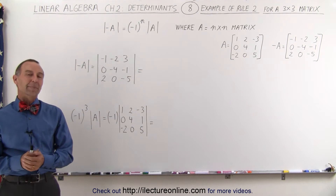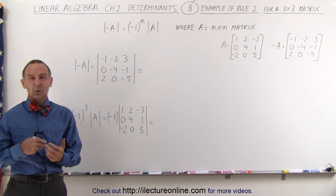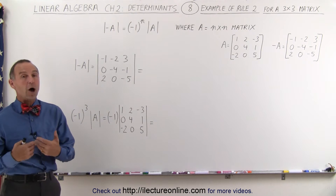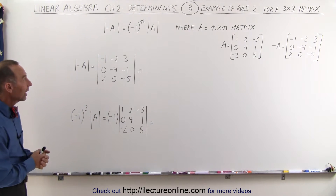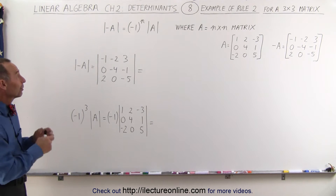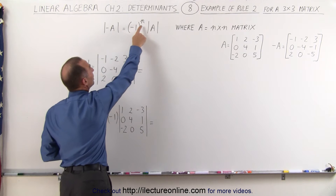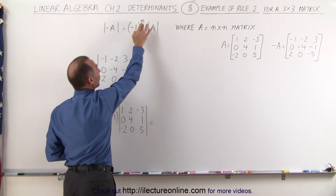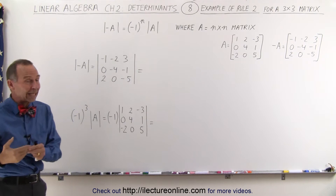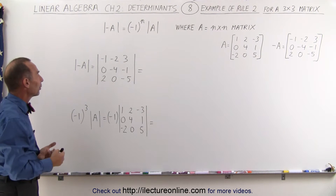Welcome to ElectronLine. I thought it might be a good idea to show you rule number two with a 3 by 3 matrix, because that's an odd order matrix. The rule applies — the same rule — but since we have to raise negative 1 to the order of the matrix, when n becomes an odd number that ends up being negative 1. Does it still work? We're going to show an example with a 3 by 3 matrix.